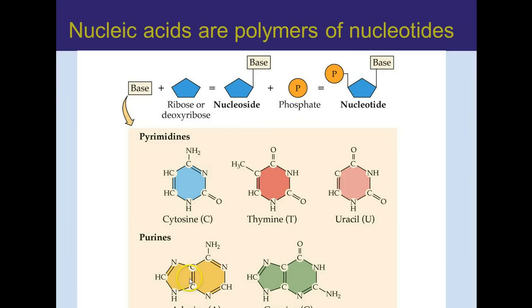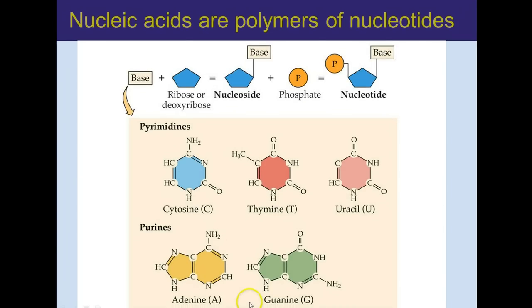The two-ring bases are purines and they're similar as well. They're two-ring structures that contain some nitrogen. It's a bigger structure, so there are four nitrogens here instead of just two, and they have different side groups. The point is not to memorize them, but when you see a ring structure that has some nitrogen in it, it's going to be a base.